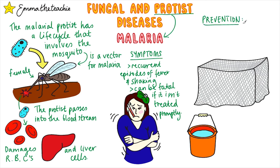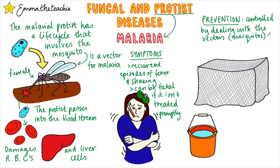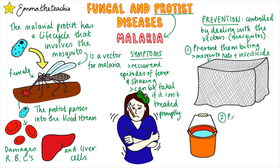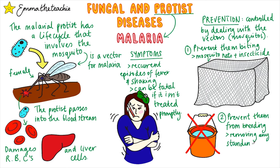The spread of malaria is controlled by dealing with the vectors, i.e. dealing with mosquitoes. First up is preventing mosquitoes from biting humans, which can be done using mosquito nets and insecticide. Secondly is preventing mosquitoes from breeding — they require standing water to breed, so removing any standing water from areas around the home can prevent them breeding near humans and reduces their population.